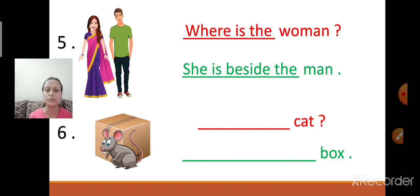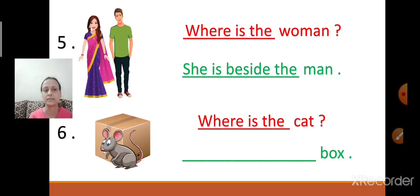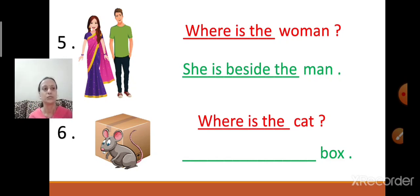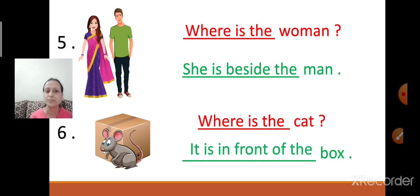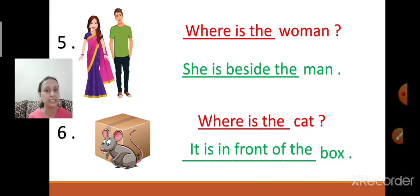Now let us move towards the sixth question. It is a cat. Frame the question: Where is the cat? Where is the cat, children? For an animal we use 'it'. So it is in front of the box. You should be able to write the spellings by yourself also, children — the spellings of beside, in front of, behind, near. And then you can frame the sentence very easily: It is in front of the box.